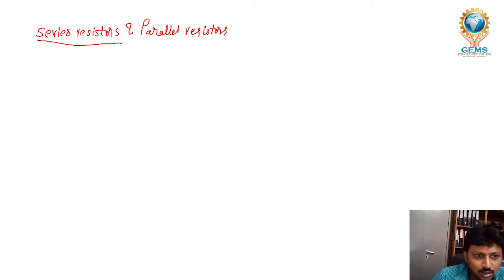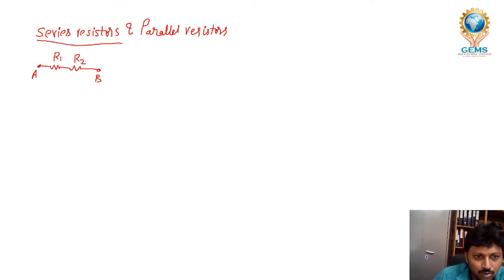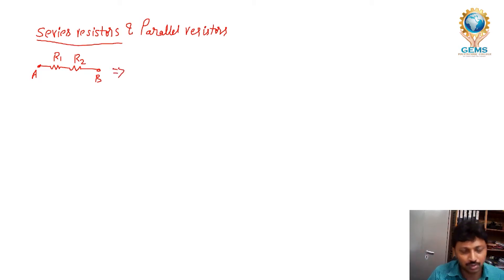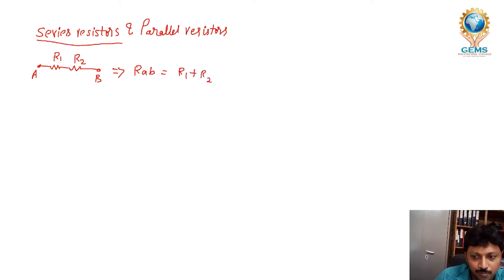First we see series resistors. If two resistors are connected in series — this is A and this is B, this is R1 and this is R2 — the total resistance RAB is equal to simply R1 plus R2.